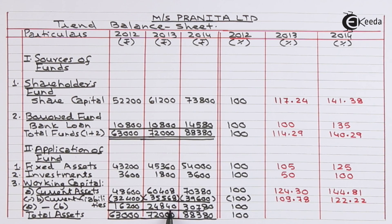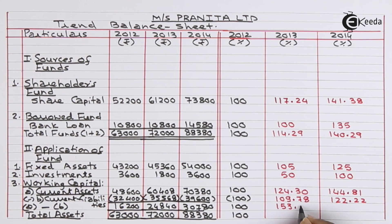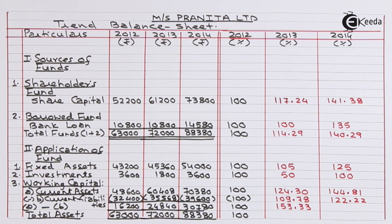Working capital for 2013: 24,840 divided by 16,200 multiplied by 100 equals 153.33 percent. For 2014: 30,780 divided by 16,200 multiplied by 100 equals 190 percent.